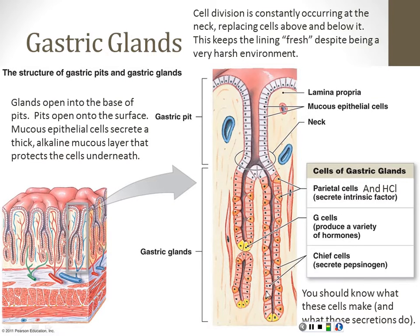The pinkish cells are called chief cells — they produce pepsinogen. Any time you see the suffix -ogen, that is a precursor protein. Pepsinogen becomes pepsin, which is an enzyme that digests proteins — turning long chains of amino acids into shorter chains. Then the G cells in yellow produce hormones; in particular, they produce the hormone gastrin, which we'll talk more about in a minute.